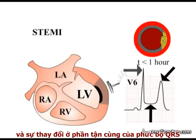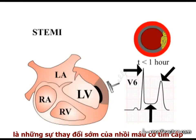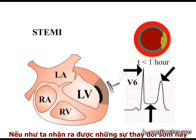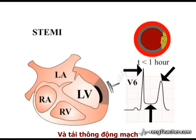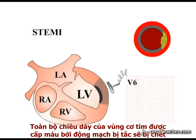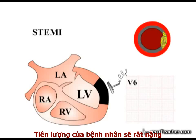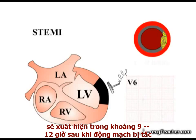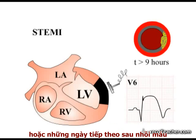Peaked T-waves, ST segment elevation, and alterations to the terminal portion of the QRS complex are the early changes of acute myocardial infarction secondary to complete occlusion of a coronary arterial vessel. If these early ECG changes are recognized and the vessel reopened using either thrombolysis or direct coronary angioplasty, the progression of the infarction can be halted and myocardium at risk of death salvaged. If left untreated, the full thickness of the region of myocardium supplied by the occluded vessel may die, associated with a poorer outcome and an interesting ECG phenomenon developing between 9 to 12 hours after vessel occlusion.